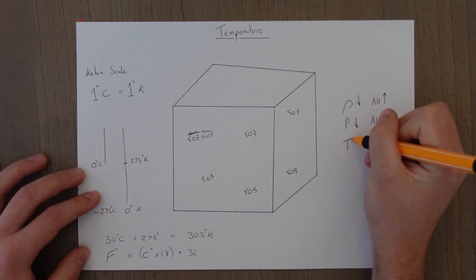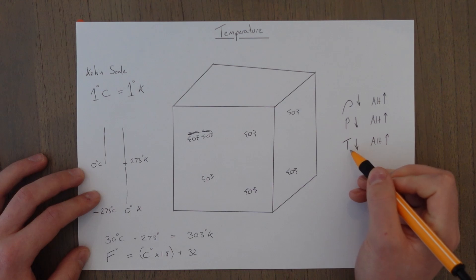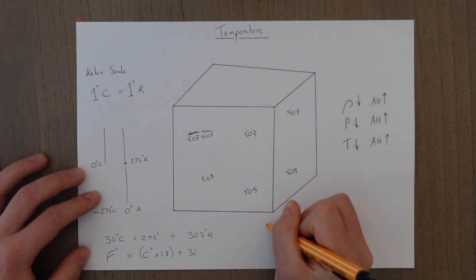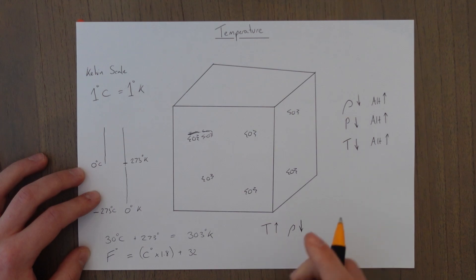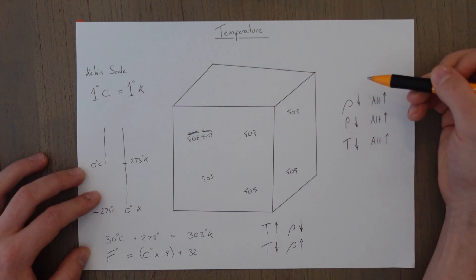But if the temperature is going down as well as the altitude increases, then that would make the density higher. Because temperature going up makes the density go down. That's hot air expanding. So the inverse is true as well. Temperature decreasing would make the density go up. So as we reduce temperature, surely the density should go up. So why is the density decreasing with altitude not increasing?